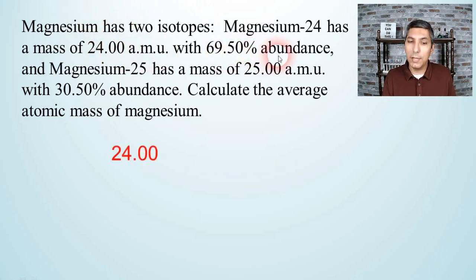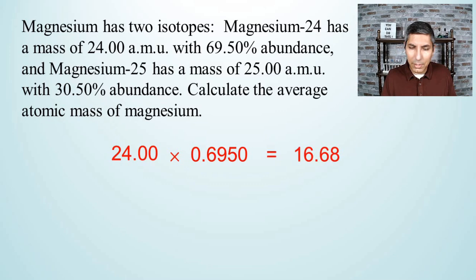Its abundance is 69.50%, so we're going to multiply by the decimal equivalent of that, which is 0.6950. When we multiply those, we get an answer of about, and I'm rounding this off a little bit, about 16.68.